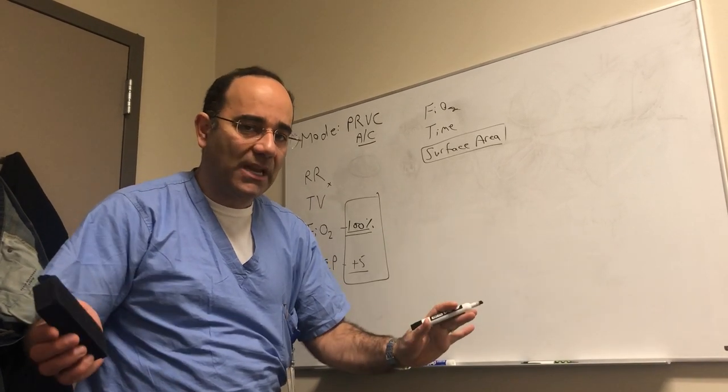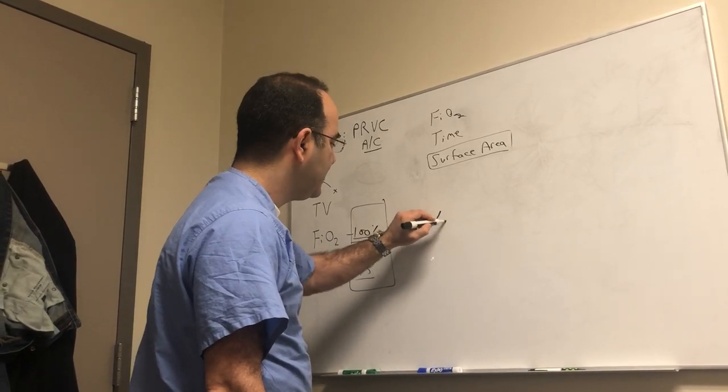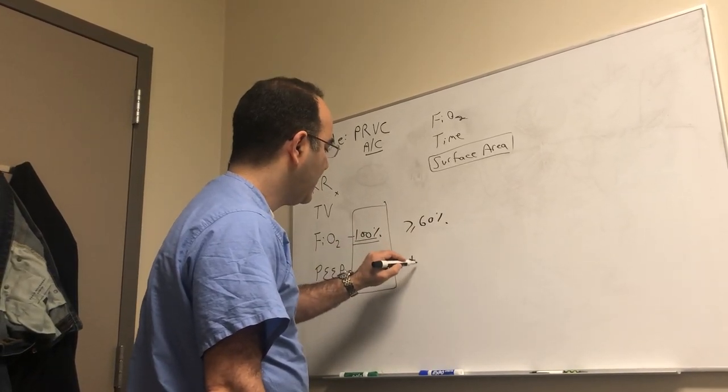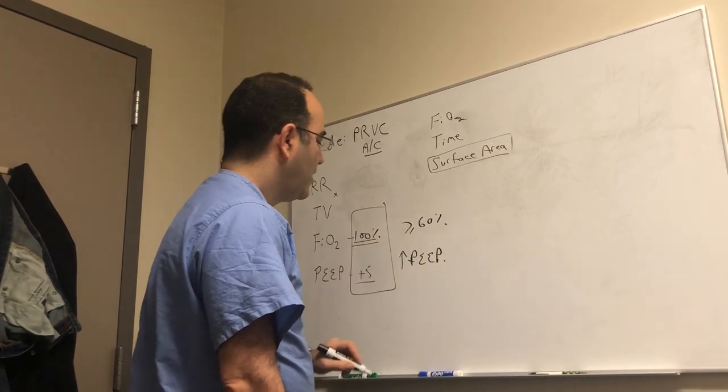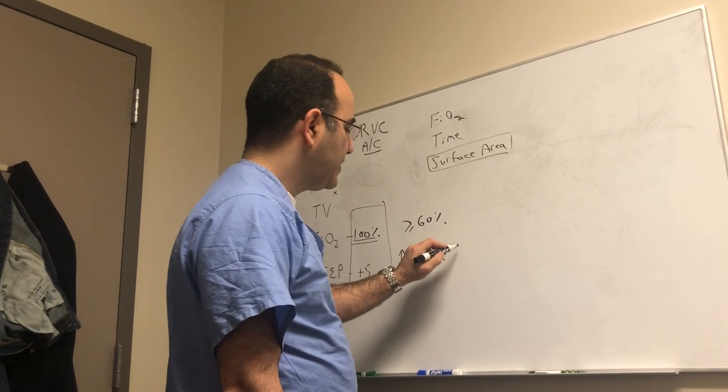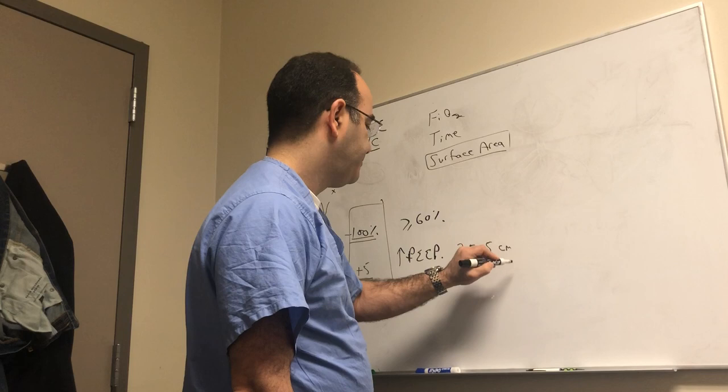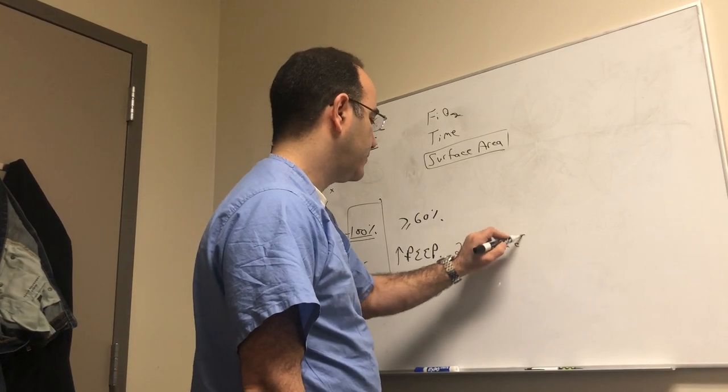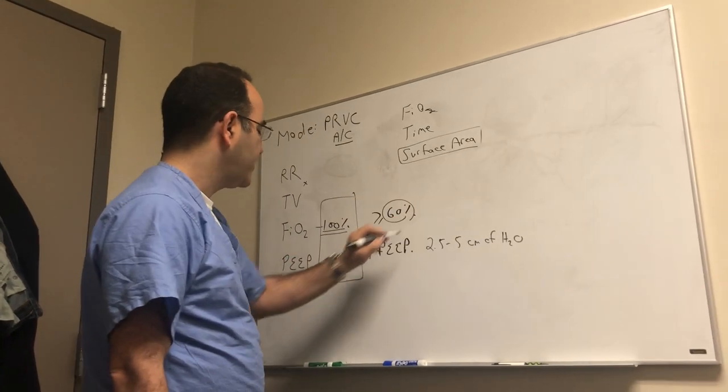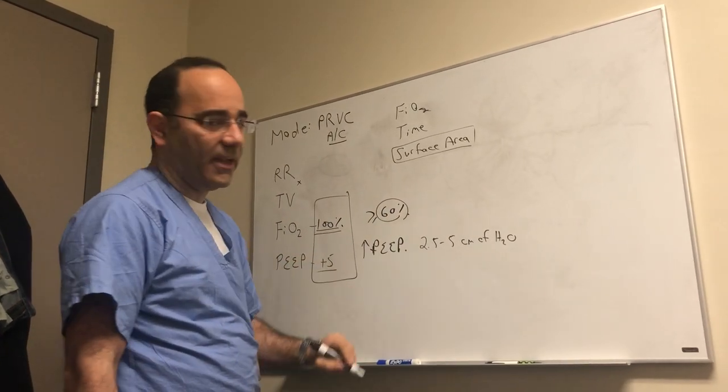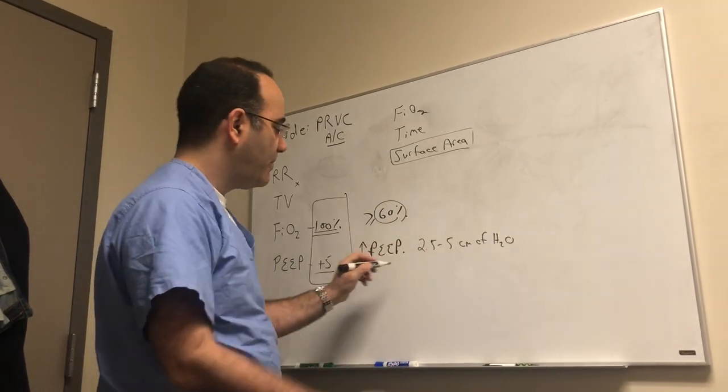As your FiO2 crosses a number that makes you uncomfortable, depends what that number is for you, for me it's 60 percent. As my FiO2 starts to meet and exceed 60 percent I start dialing up my PEEP. Generally speaking PEEP is increased in aliquots of 2.5 to 5 centimeters of water. So as my FiO2 starts hitting 60 percent I'm going to go from a PEEP of five to a PEEP of eight. As it starts to go to 70 percent I'm going to go from PEEP eight to PEEP ten. I'm going to bring them both up.